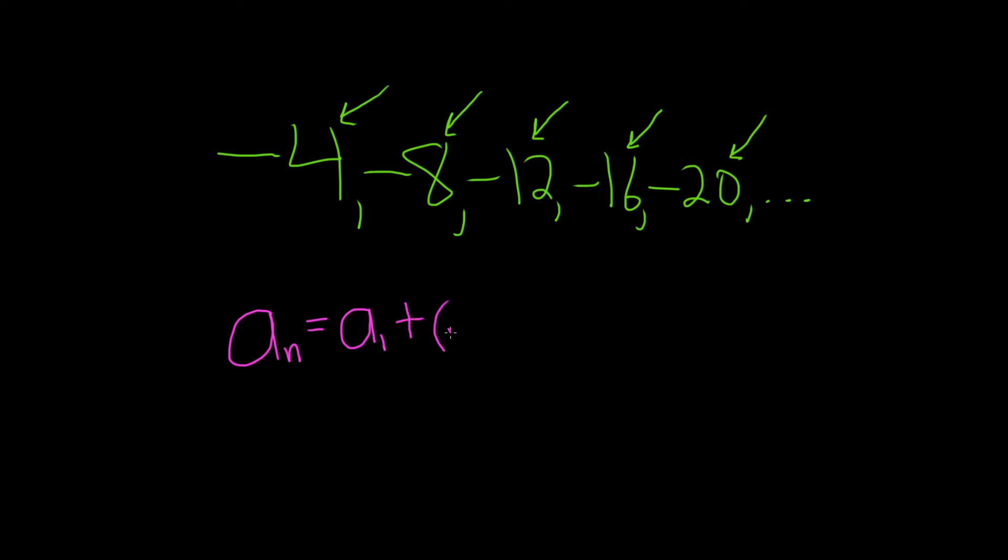Plus parentheses n minus 1 times d, where d is called the common difference. d is that number we keep adding.